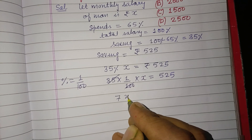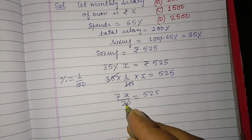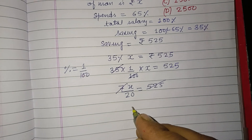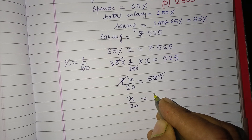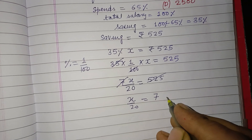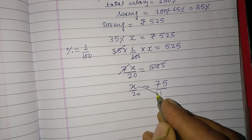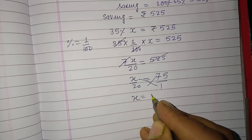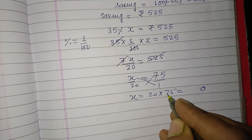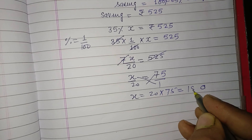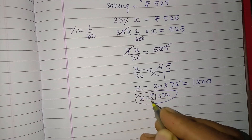Simplifying: we divide 525 by 7 to get 75, and 35 divided by 7 gives 5, leaving X multiplied by 5 upon 20 equals 75. On cross multiplication, 20 into 75 gives 1500. So X equals 1500.